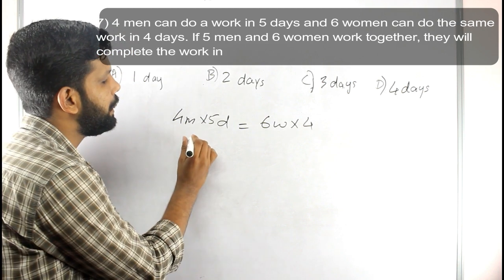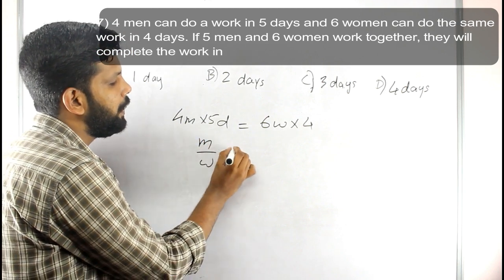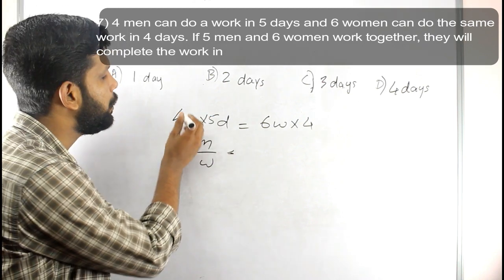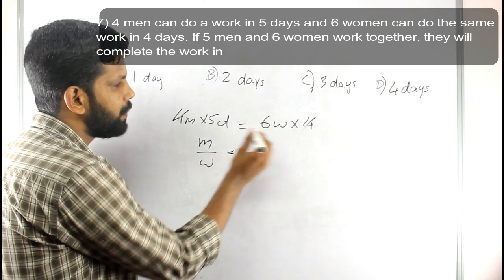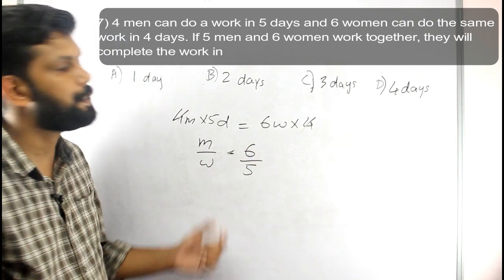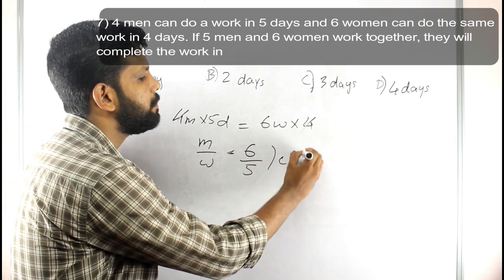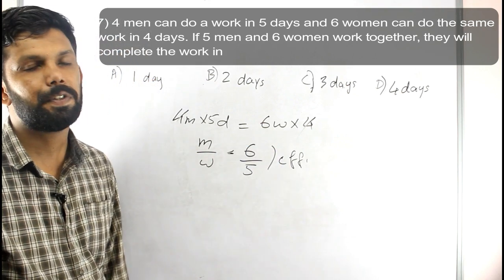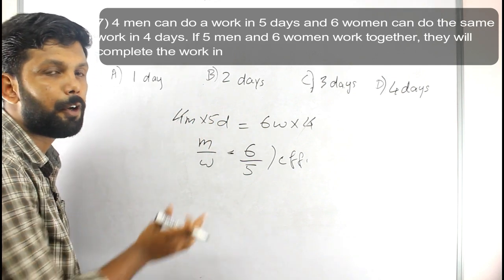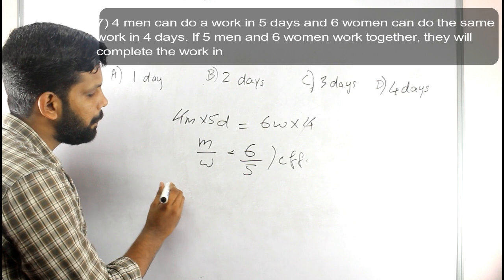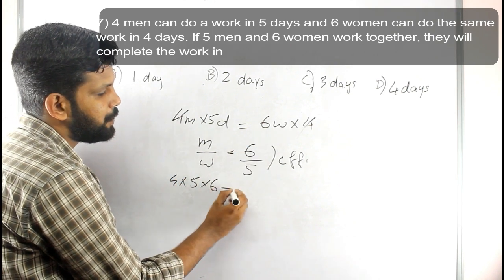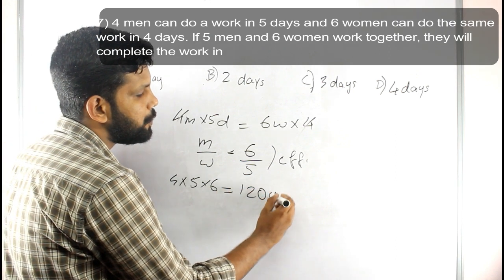We find the efficiency ratio of men to women. For 4 men working 5 days, the efficiency gives us 6 to 5 ratio. The efficiency of women is 5. The total units of work is calculated by multiplying efficiency by days: 4 men into 5 days equals 20, and 6 women into 4 days equals 24, but the total work units are 120.